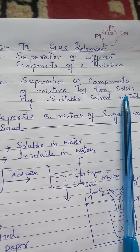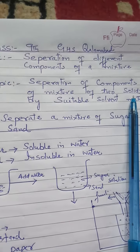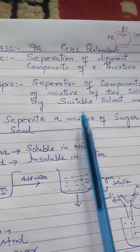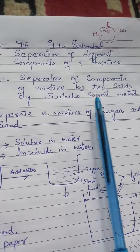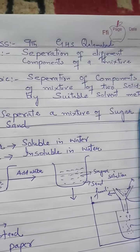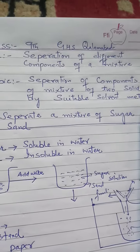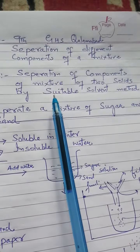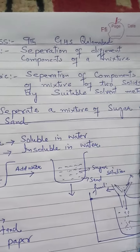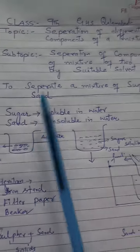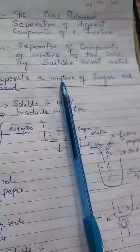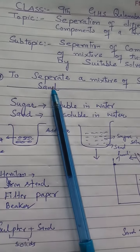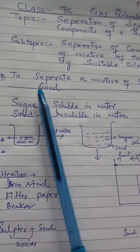How can we separate these two components or more than two components by one of the methods called the suitable solvent method? Let us take an example: how can we separate a mixture of sugar and sand? As we know, sugar is a solid and sand is a solid.